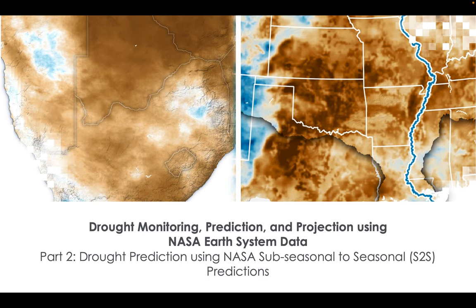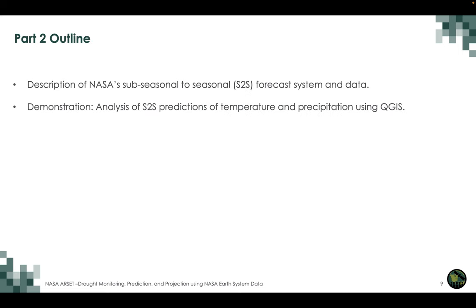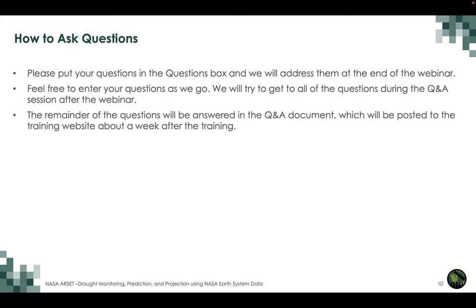This brings us to today's session on S2S predictions. The overall objectives for today are: we will recognize the functionality of NASA's sub-seasonal to seasonal forecast system and data, and assess evolving drought conditions using given S2S temperature and precipitation prediction data for a region of interest. We'll start with a description of NASA's S2S forecast system and data, followed by a demonstration of analysis of S2S predictions of temperature and precipitation in QGIS.